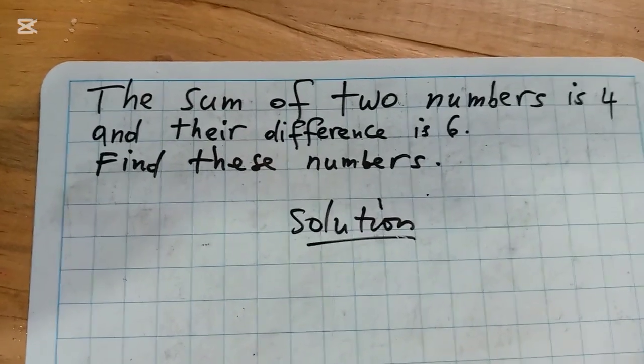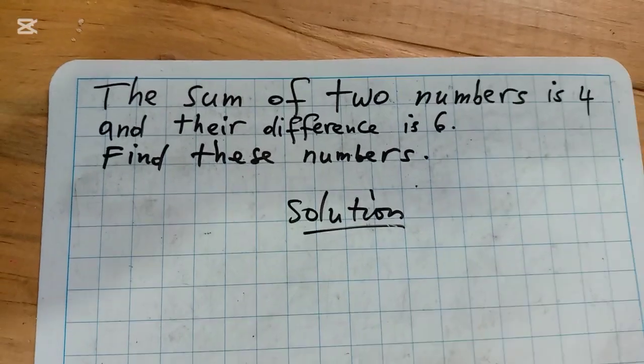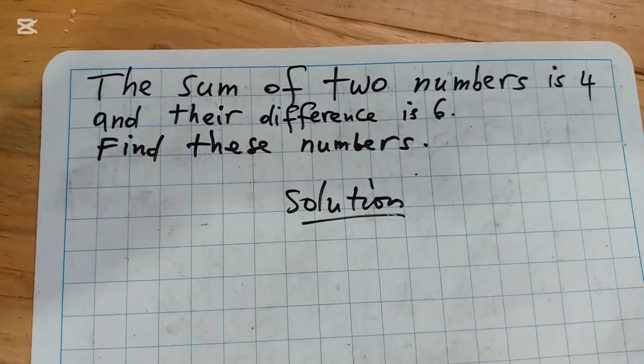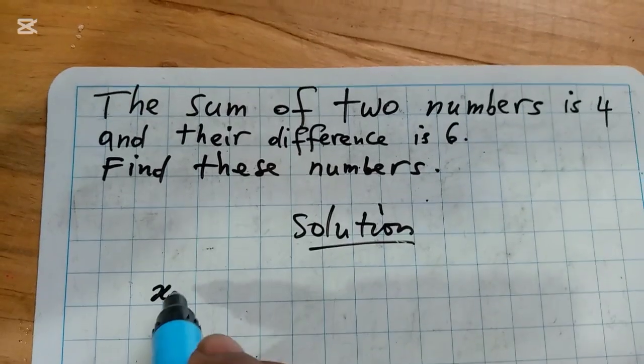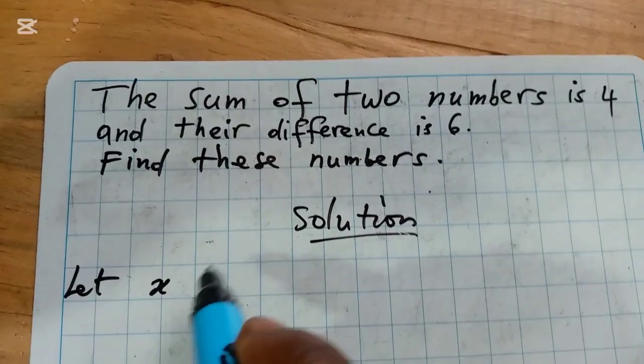To find these two numbers, we need to think of simultaneous equations. Let X be the big number and Y be the small number.